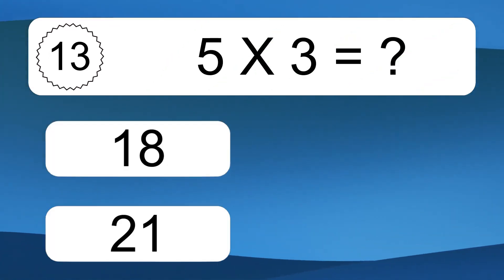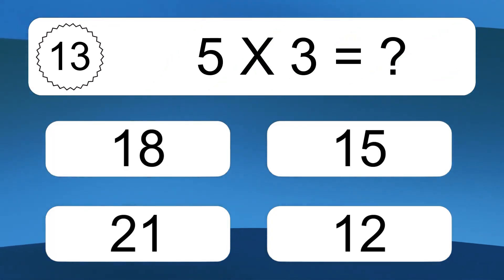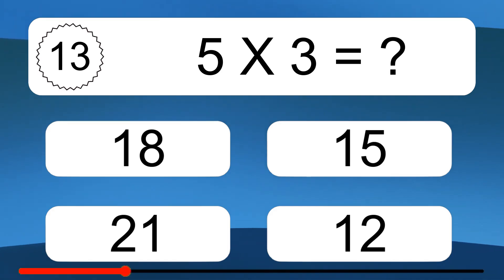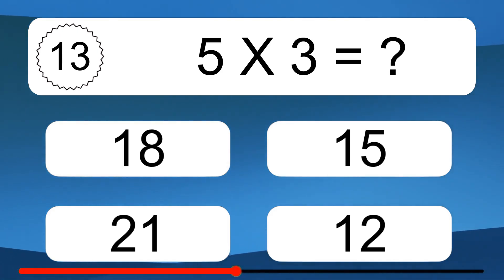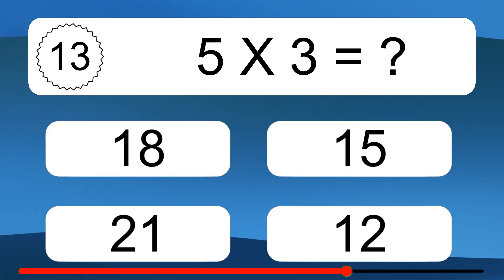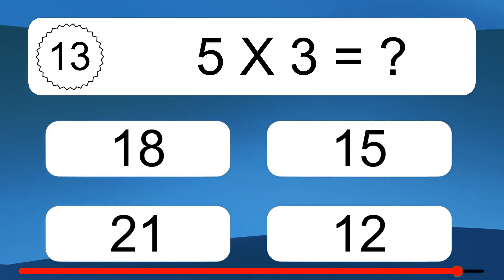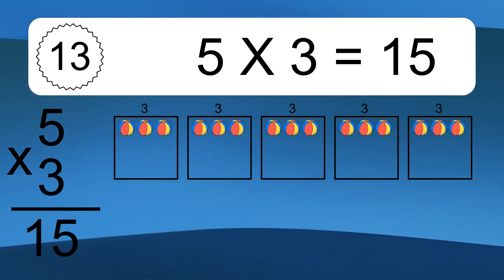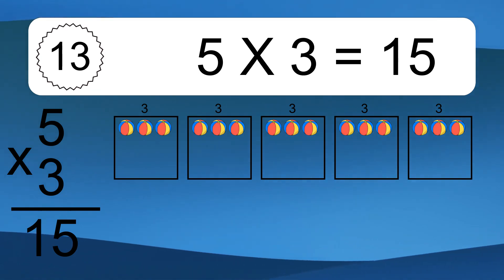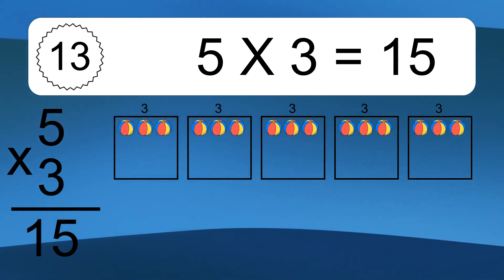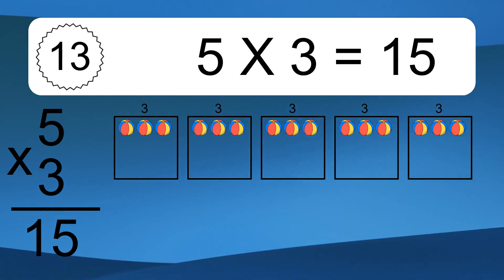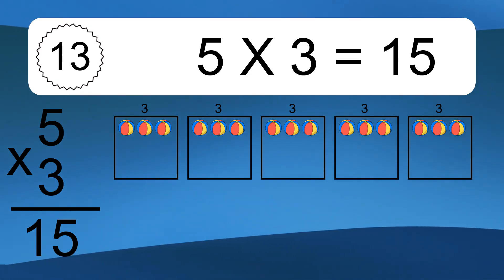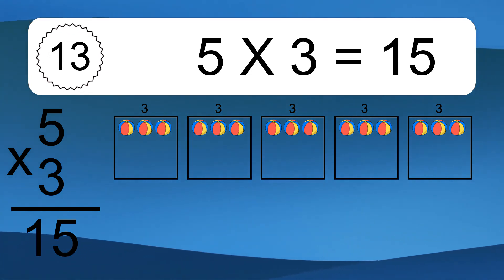Five times three equals what? Five times three equals 15. We have five boxes, and each box has three colorful balls inside. If you count all the balls in all the boxes together, you will have 5 times 3 balls. This equals 15 balls.